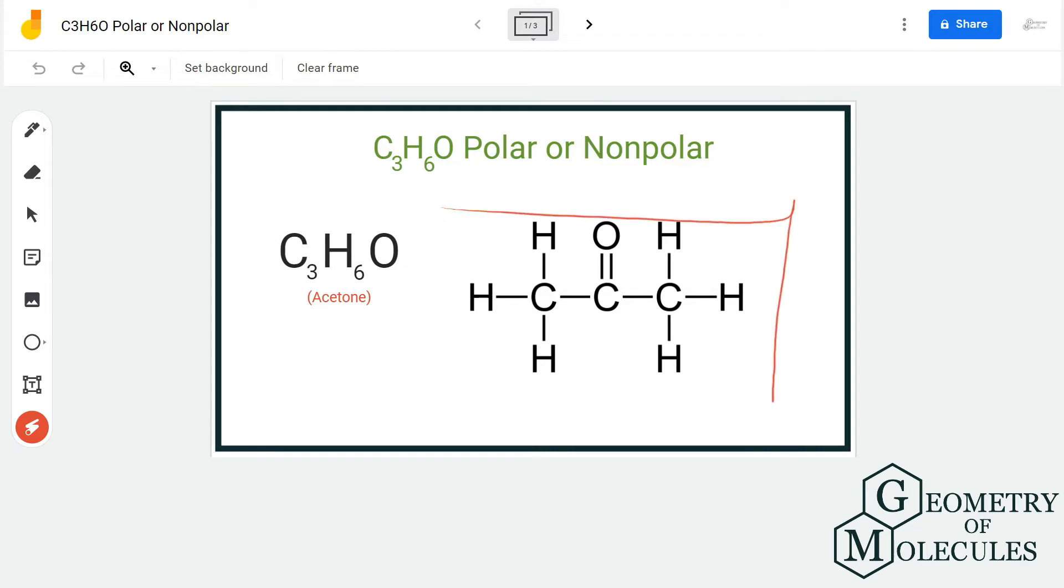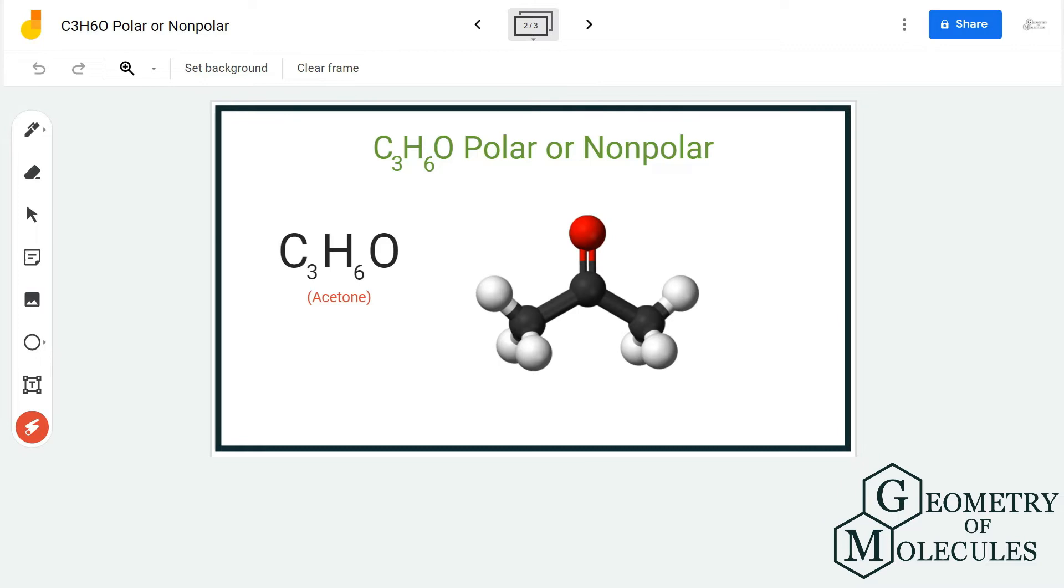If you look at its Lewis structure, it's quite simple because it is symmetric. It has one oxygen atom over here which is forming a double bond with a carbon atom, and the rest we have are hydrogen and carbon atoms. When you look at its 3D shape, it seems symmetric, right?